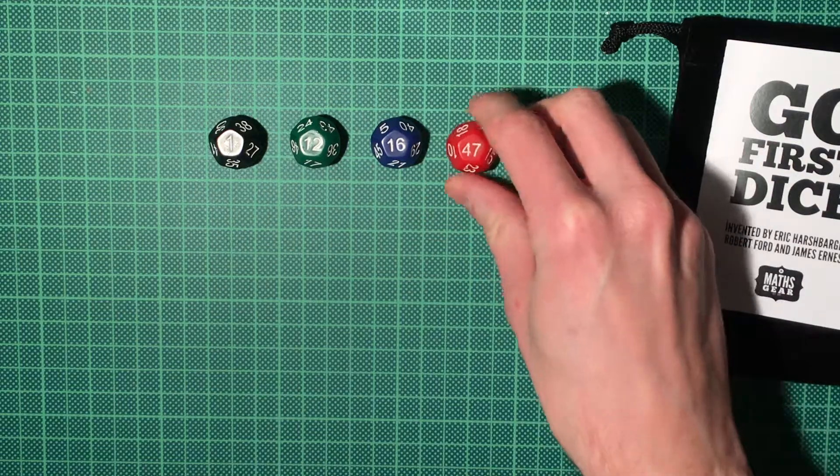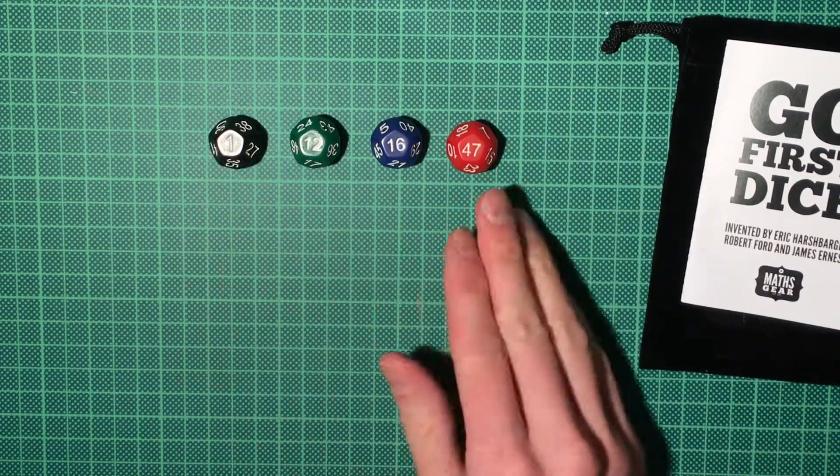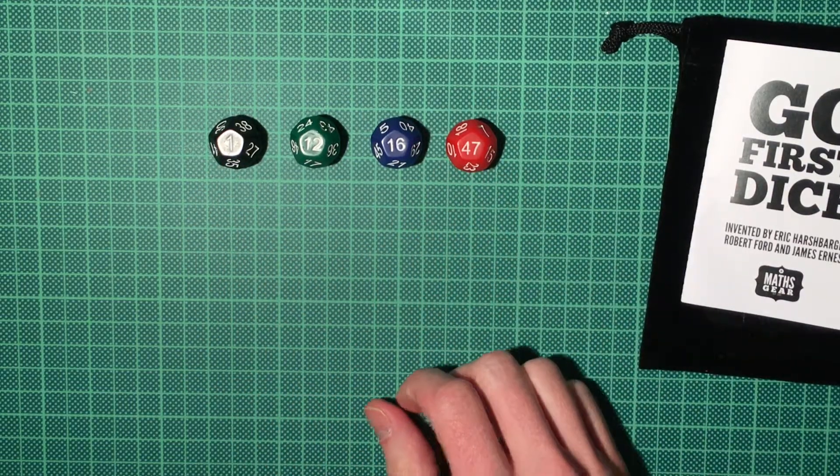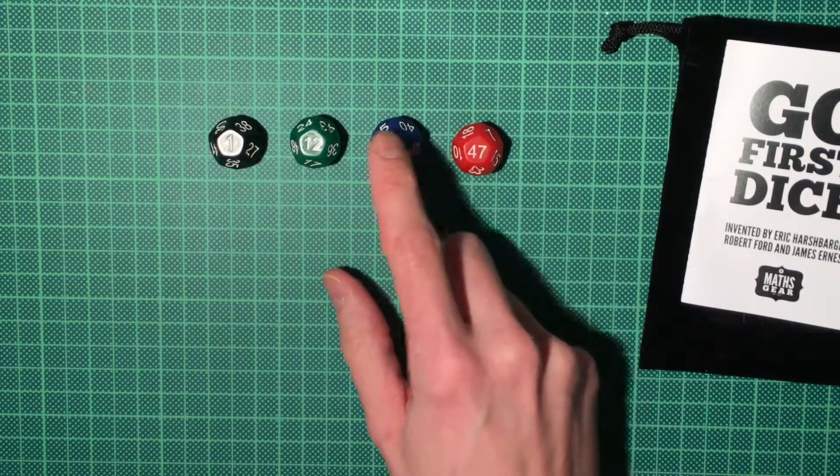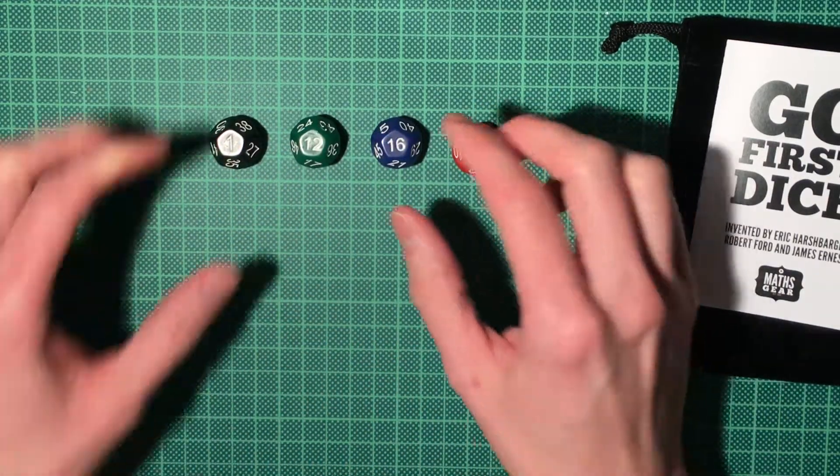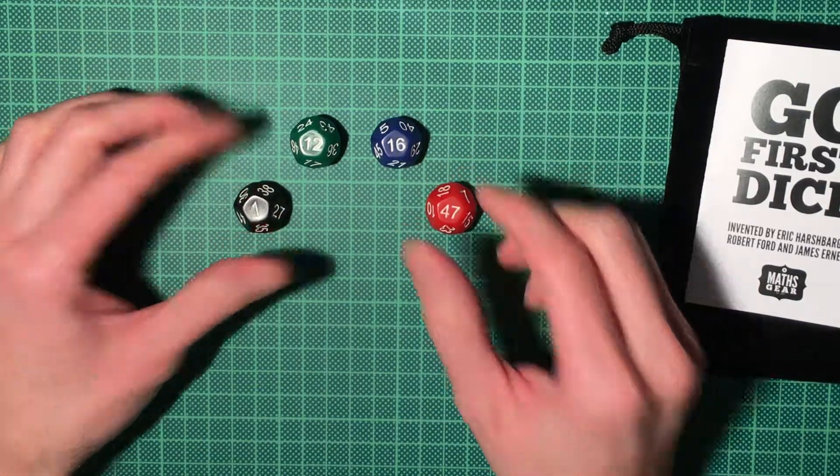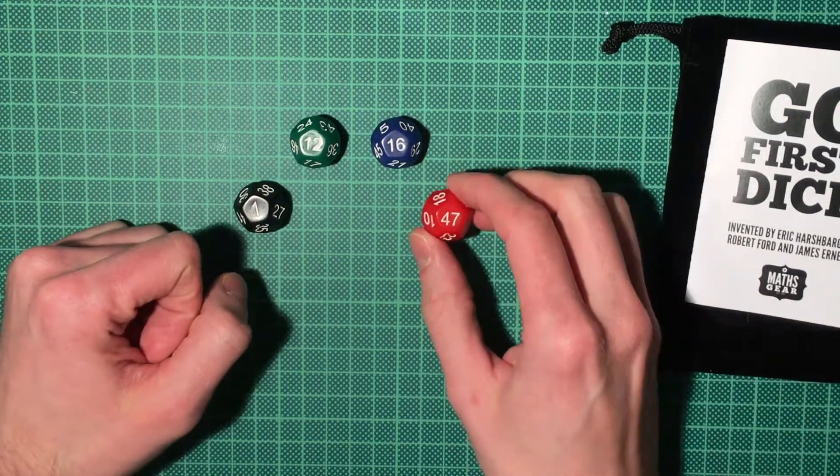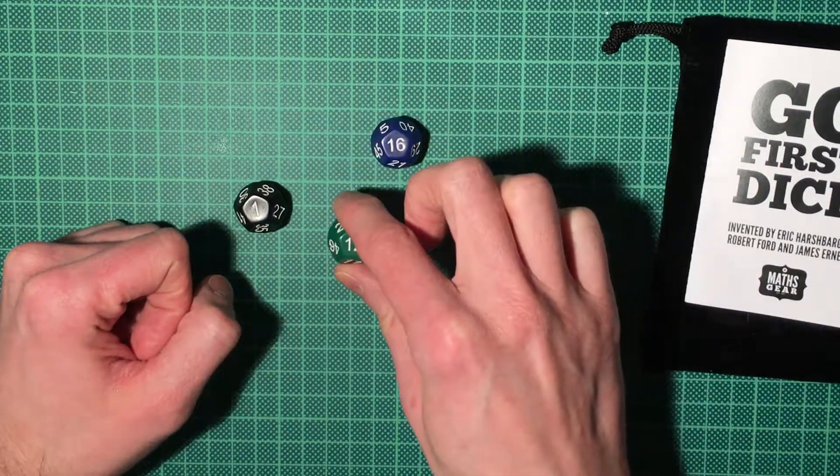For example here, you can say lowest wins or highest wins. Red will win if lowest. If highest wins, then blue, then green, then black. Well, how does this work? The dice have 12 sides.